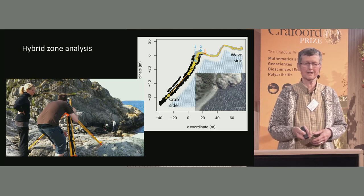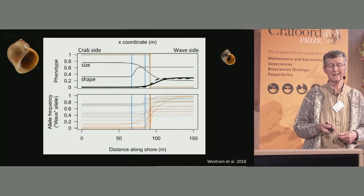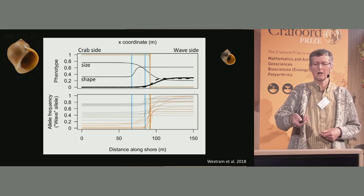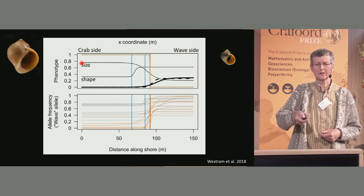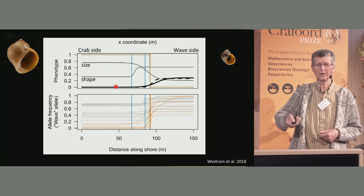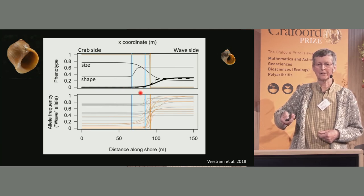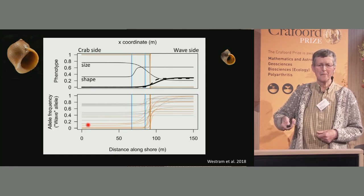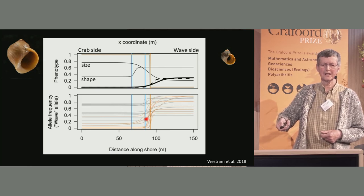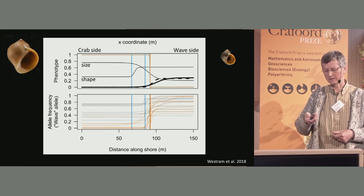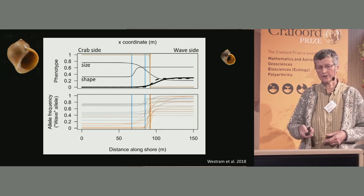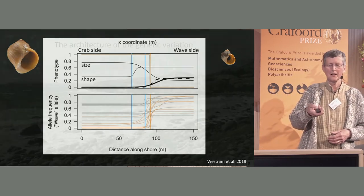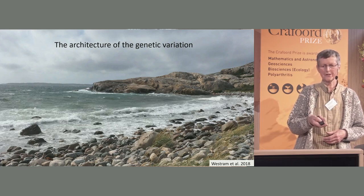Passing from one end of the transect on the crab side over the contact zone to the wave side, many phenotypic traits change — size, shape, color — right where the environmental change occurs. These vertical lines indicate abrupt changes in the environment. We also found lots of SNPs and alleles that change at exactly this spot. By genome-wide sequencing, we found something in the magnitude of 2,000 SNPs that changed at this exact hybrid zone center.